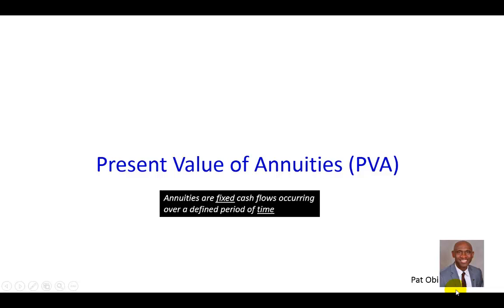This is video number seven in my time value of money series, presenting calculations for the present value of annuities. Annuities are fixed cash flows occurring over a defined period of time. The two key elements are that the cash flows must be the same from year to year, and the time period must be bounded.